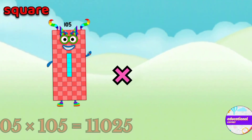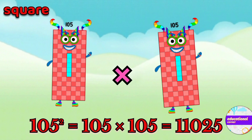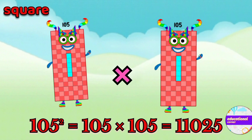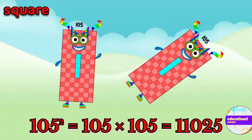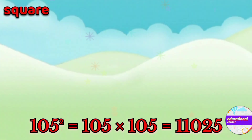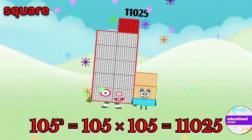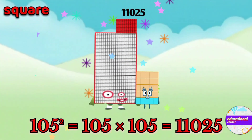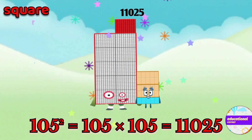105 multiply by 105, so the square of 105 is eleven thousand and twenty five.